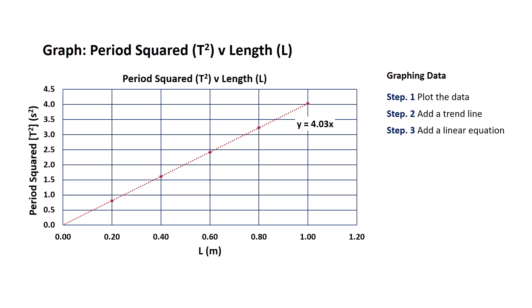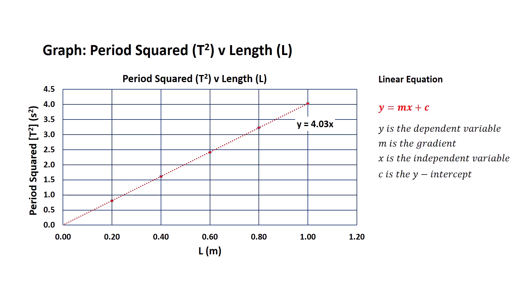Excel generates the following linear equation: y equals 4.03 times x. The traditional linear equation is of the form y equals mx plus c, where y represents the dependent variable, m is the gradient, x is the independent variable, and c is the y-intercept. So let's use the general linear equation and apply it to this specific scenario.